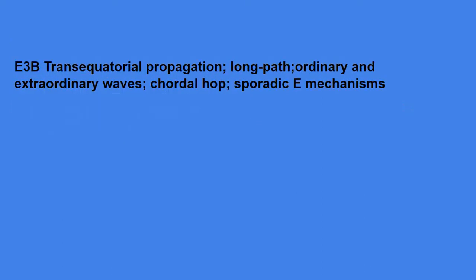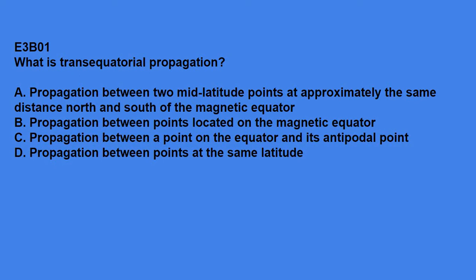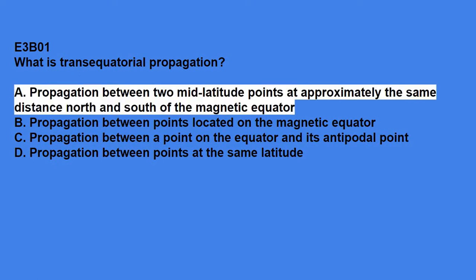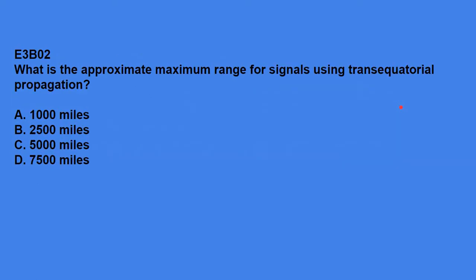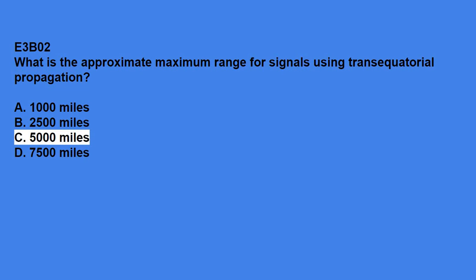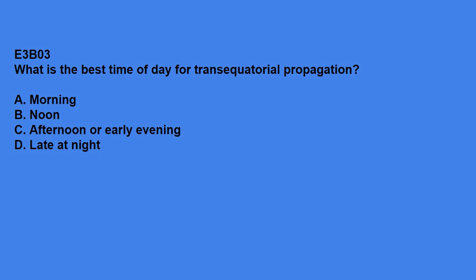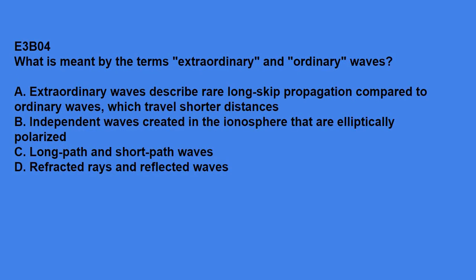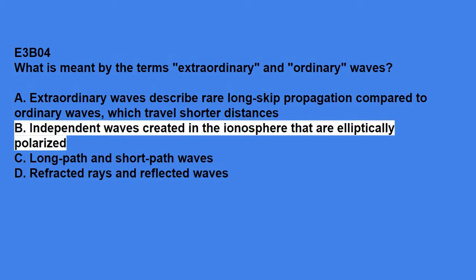E3B covers transequatorial propagation, long path, ordinary and extraordinary waves, chortle hop, sporadic E mechanisms. E3B01 says, what is transequatorial propagation? The answer is propagation between two mid-latitude points at approximately the same distance north and south of the magnetic equator. E3B02, what is the approximate maximum range for signals using transequatorial propagation? The answer is 5,000 miles. E3B03, what is the best time of day for transequatorial propagation? The answer is afternoon or early evening. E3B04, what is meant by the terms extraordinary and ordinary waves? Independent waves created in the ionosphere that are elliptically polarized.